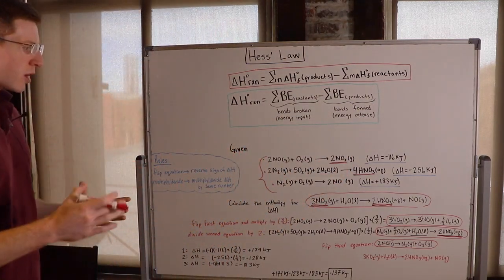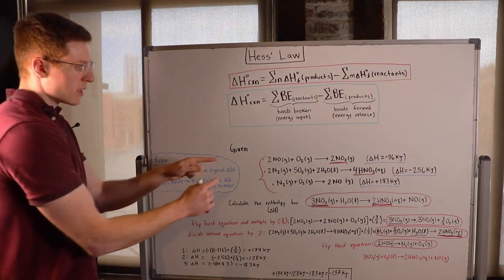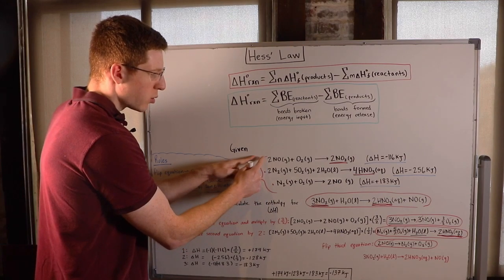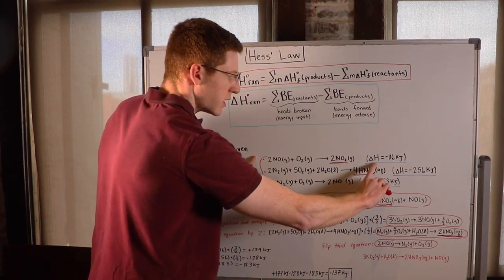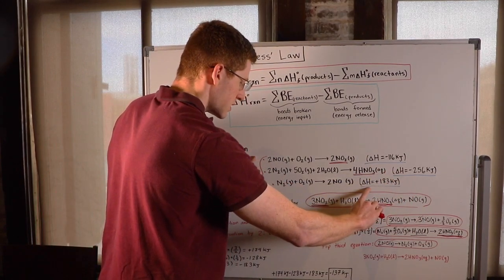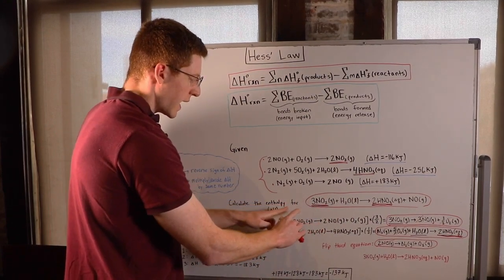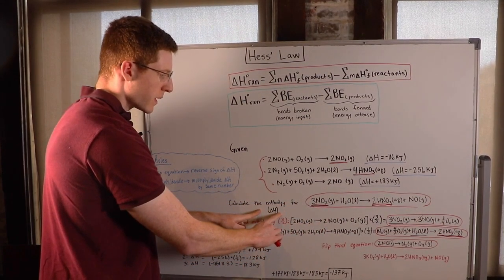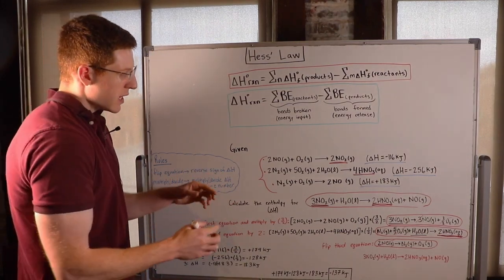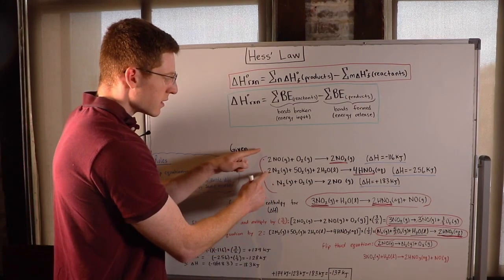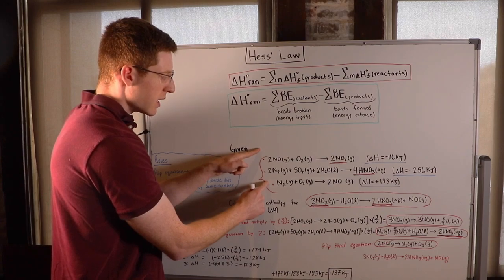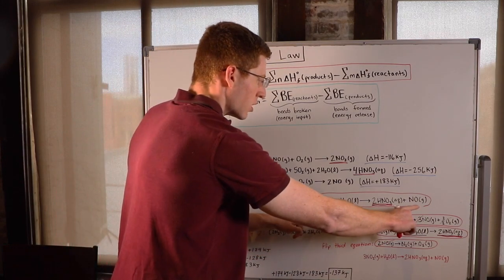So the way that you apply this to problems is you'll commonly be given a list of chemical equations with their associated enthalpies or delta H, and then you'll be given a final equation and asked for its delta H. So the trick to these problems is you somehow have to manipulate the given equations and add them together to make them look like this.